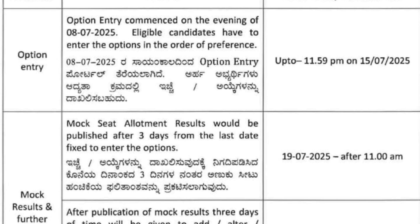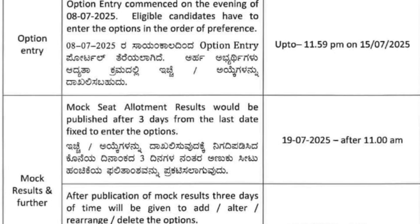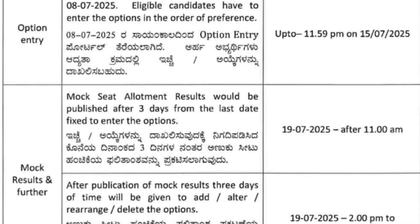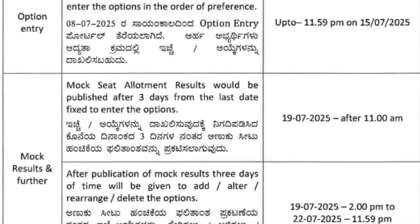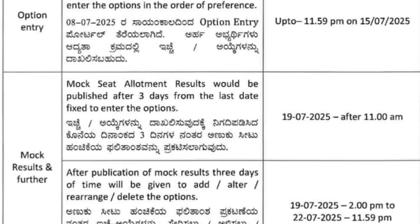Mistake one: not checking the allotment dates daily. Many students assume they will get a message or email, but KA and MCC usually don't send personal alerts. You must regularly check the official website for mock allotments, round one, two, three seat allotments, payment details, and payment deadlines.